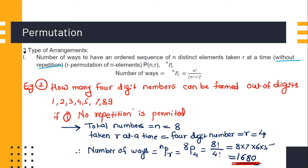We have to select r at a time, and since we must form a 4-digit number, our value of r is 4. So the number of ways will be 8P4, that is 8 factorial divided by 4 factorial. Without repetition, the total comes out to be 1680 — there are 1680 ways to form the 4-digit number.